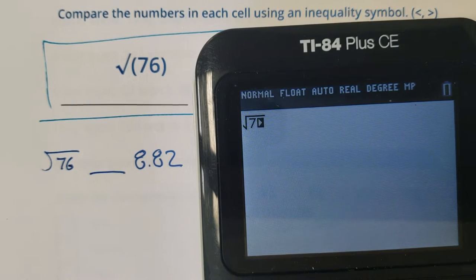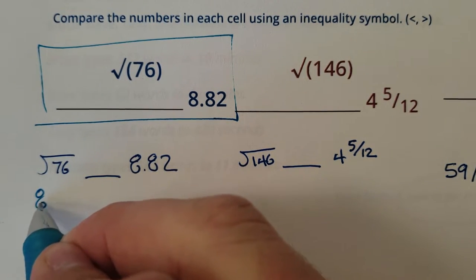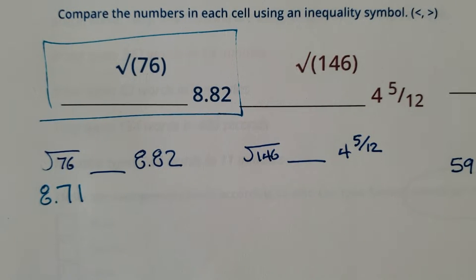Let's go. Square root of 76, you are 8.71. So 8.71. That's going to be an easy comparison there.